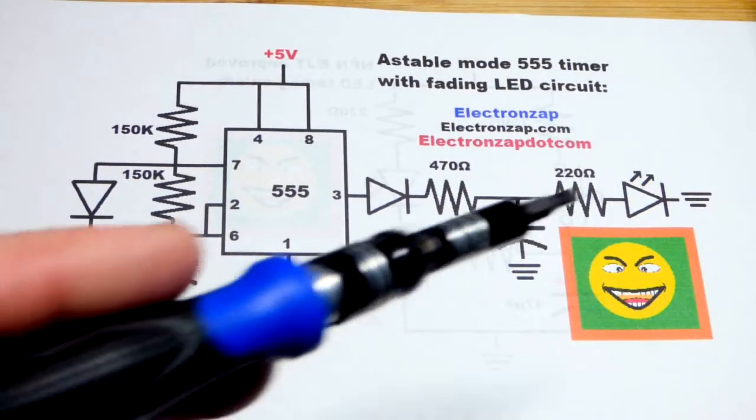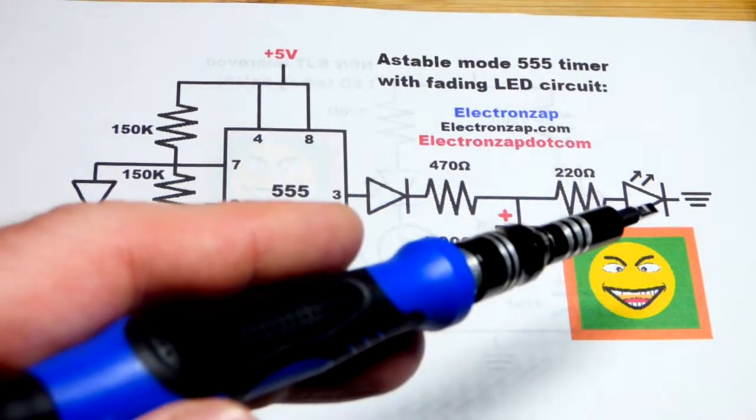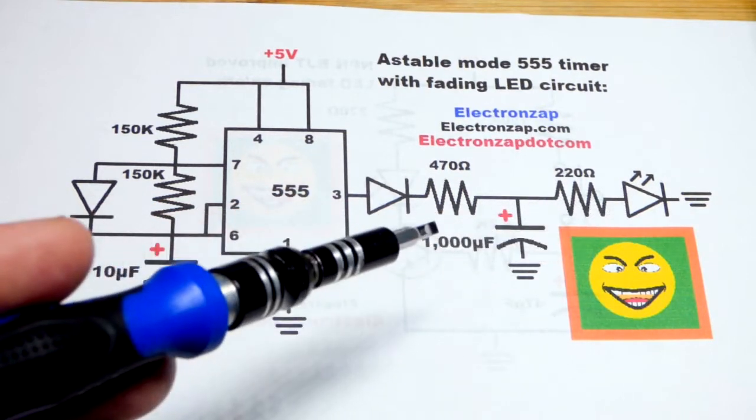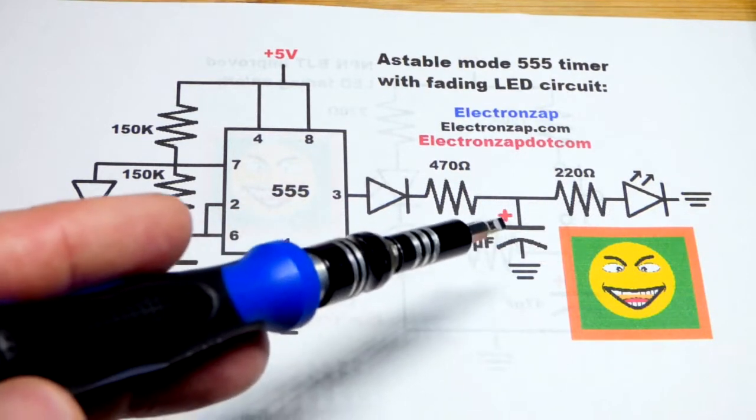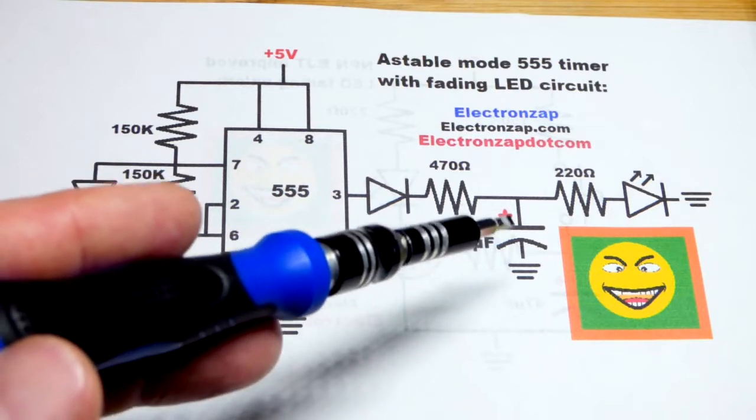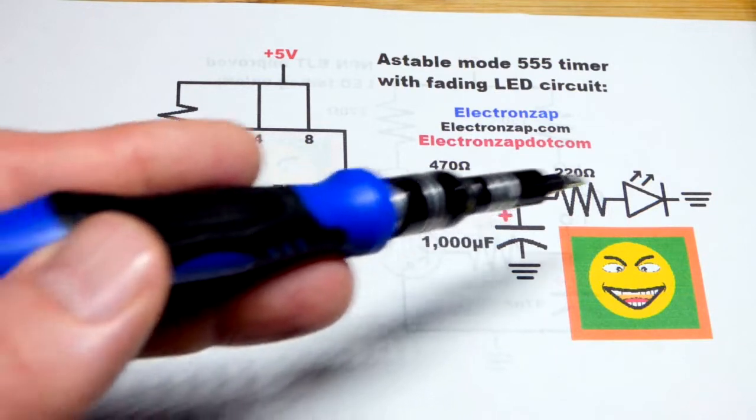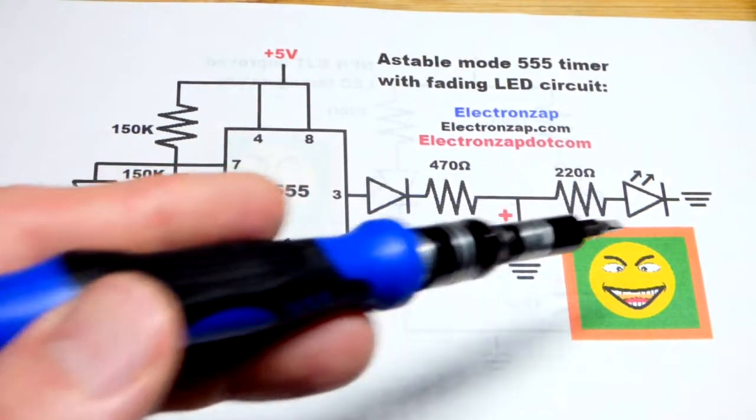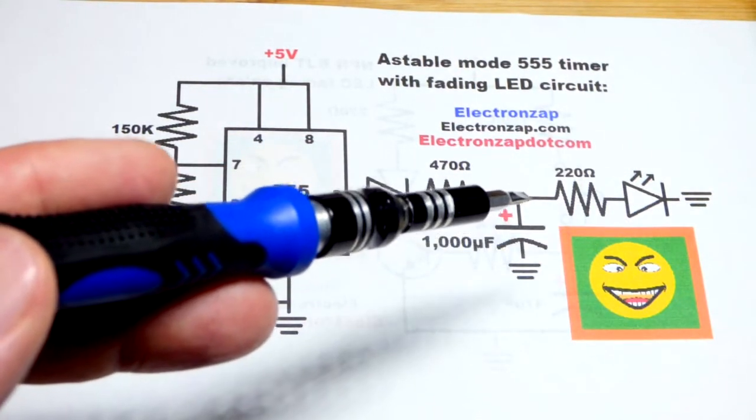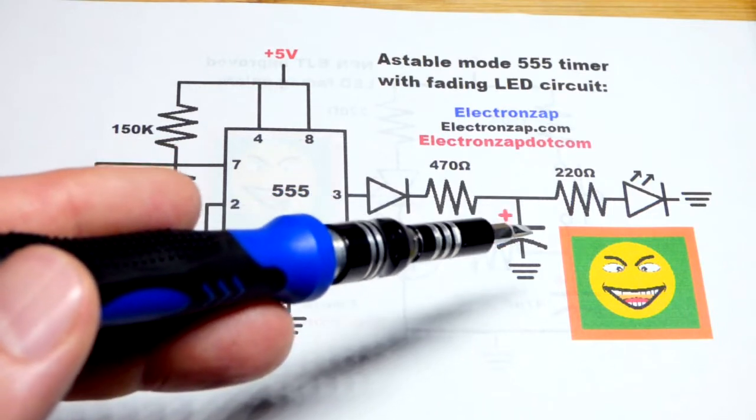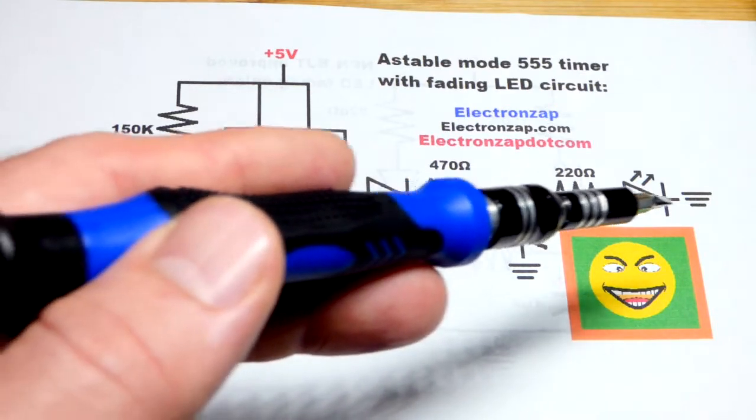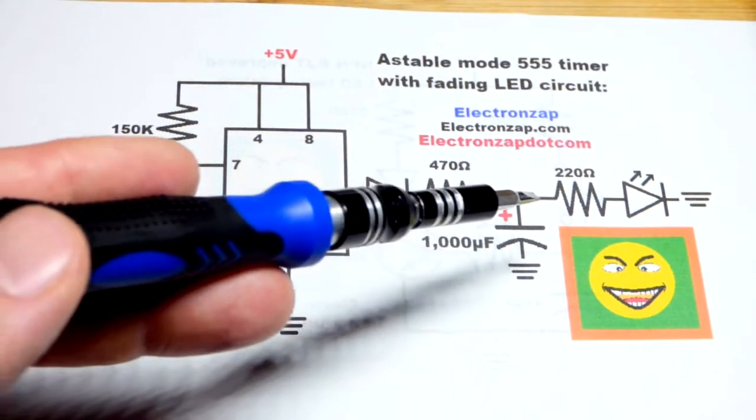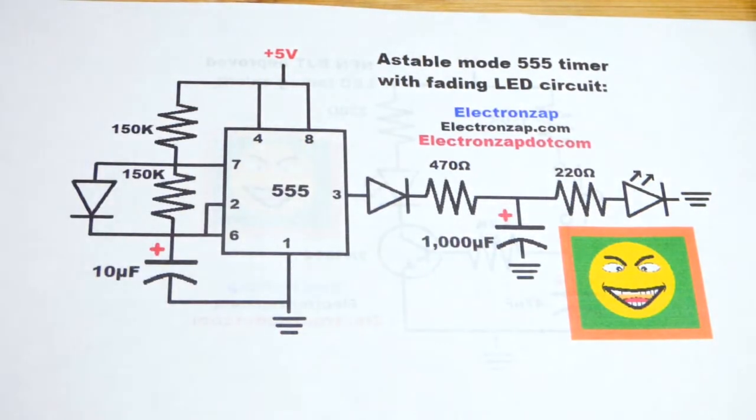So now in this video we're going to make another fading LED on and off. We've done a couple videos so far. We're going to come back to the straightforward approach. The capacitor is charging as the voltage goes up. Pretty straightforward.